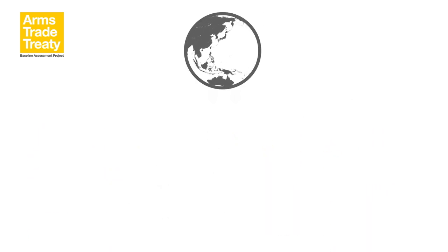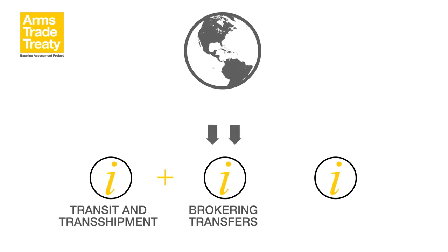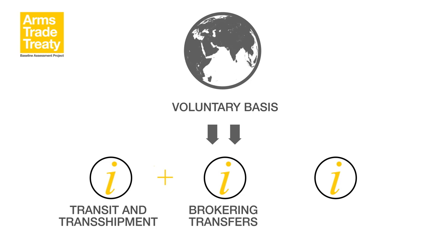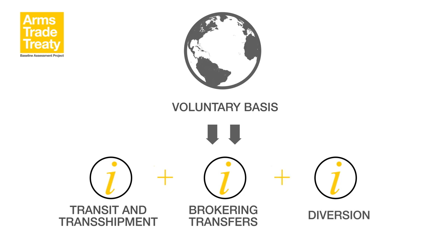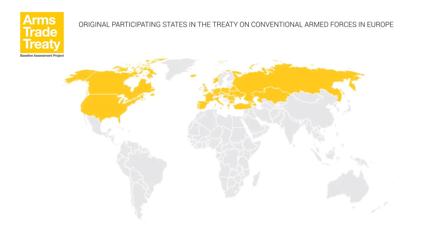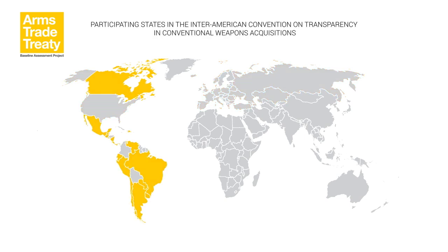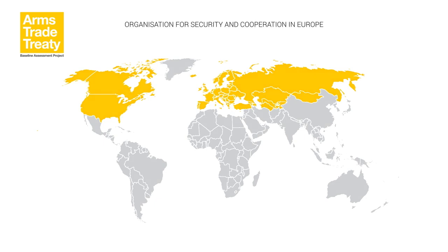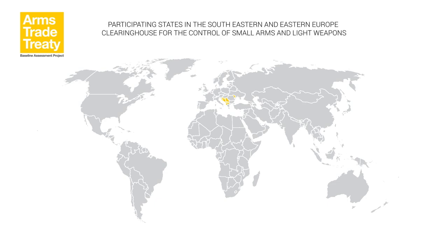The ATT requires states' parties to submit an initial report on measures undertaken to implement the treaty and annual reports on arms exports and imports, to include information on authorisations and/or actual exports and imports of the conventional weapons under the scope of the ATT. States' parties may also choose to share and exchange information on transit or transshipment and brokering transfers on a voluntary basis. Additionally, states' parties may choose to provide a voluntary report to the ATT Secretariat on measures undertaken to address diversion. Governments have also pursued other multilateral and regional initiatives, such as the Treaty on Conventional Arms Forces in Europe, the Wassenaar Arrangement, the Inter-American Convention on Transparency in Conventional Weapons Acquisition, the European Union's Annual Reports on Arms Exports, the OSCE Document on Small Arms and Light Weapons, and the SEESAC Regional Reports on Arms Exports.